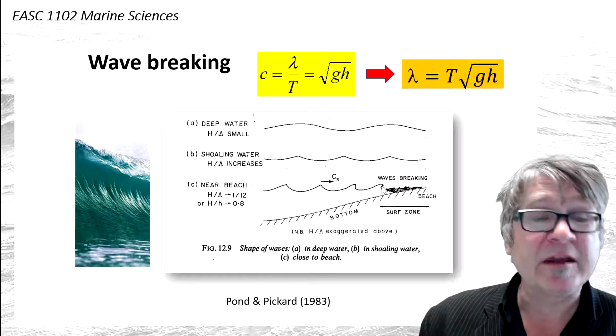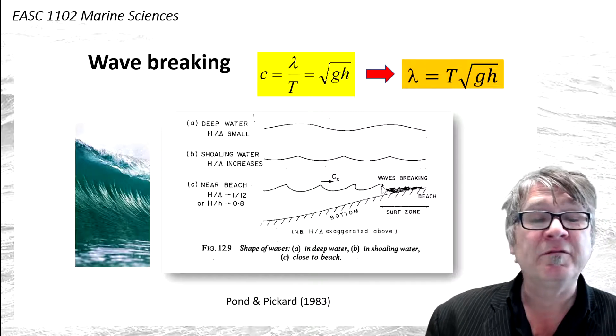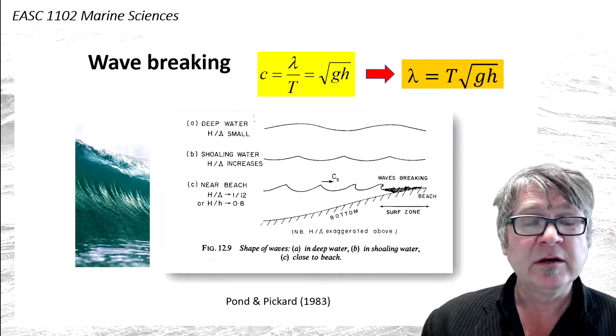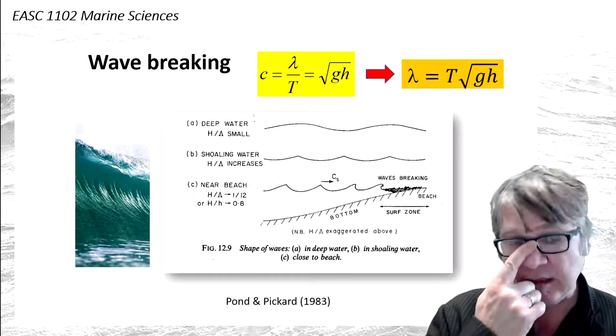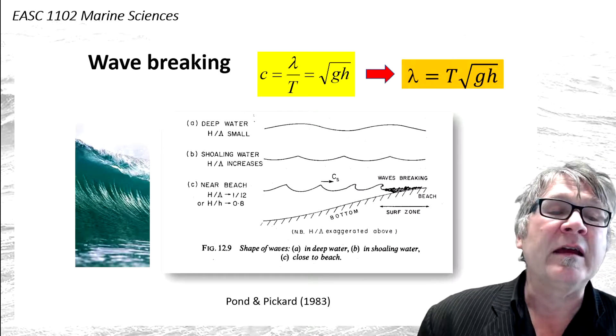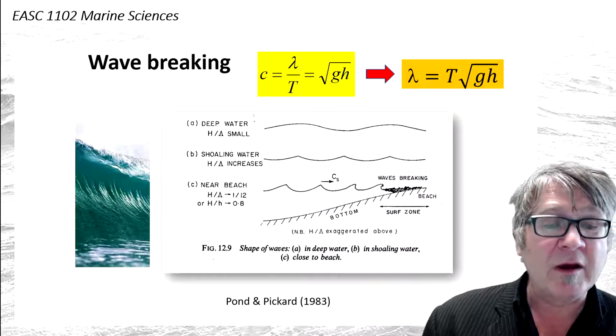Several features happen at the same time: the wavelength decreases, the wave piles up due to volume conservation, it becomes steeper, and the wave breaks.